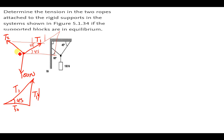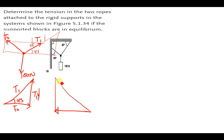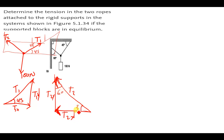We also draw a second triangle for T2, facing this side, with the angle there. The x component of T2 faces this direction, and the y component of T2 goes up along the positive y-axis. Since the angle here is 60 degrees, this angle is 30 degrees, because the internal angles of a triangle add up to 180 degrees.